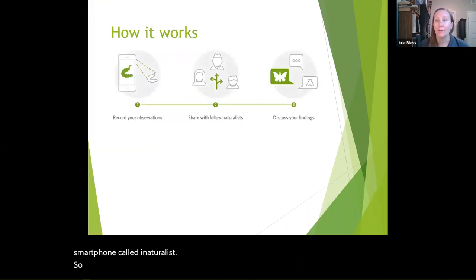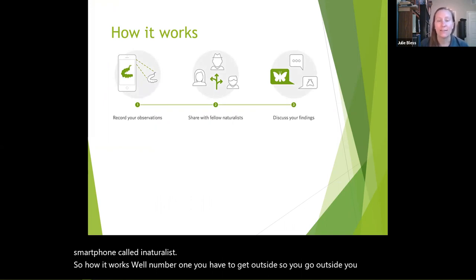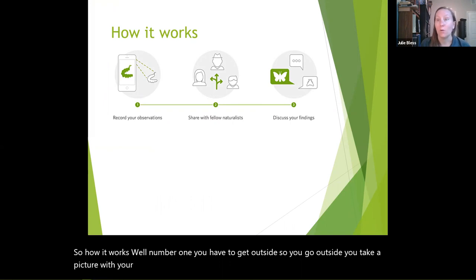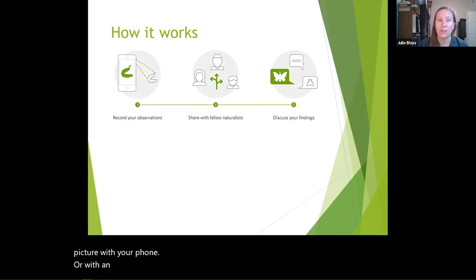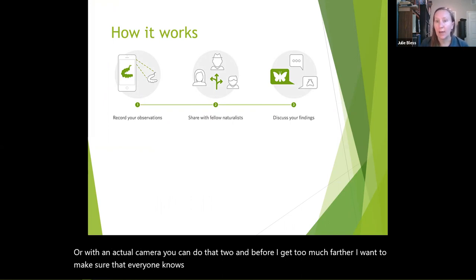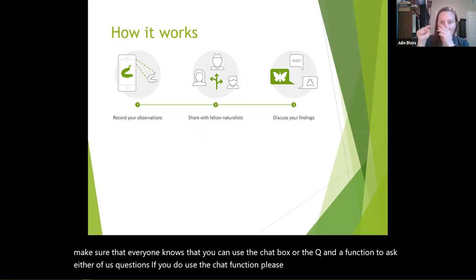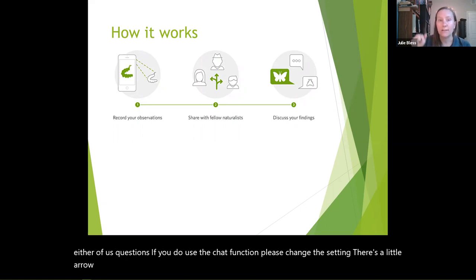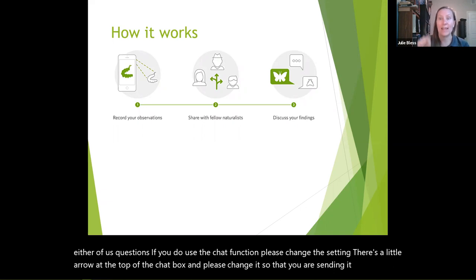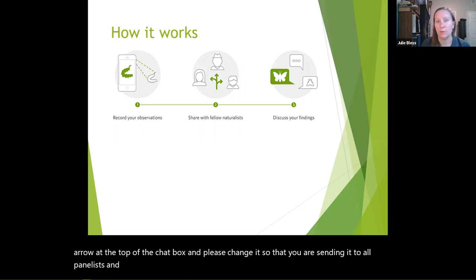So here's how it works. Number one, you have to get outside. You go outside and take a picture with your phone or with an actual camera. Before I get too much farther, I want to make sure everyone knows that you can use the chat box or the Q&A function to ask either of us questions. If you use the chat function, please change the setting using the little arrow at the top of the chat box so that you are sending it to all panelists and attendees.